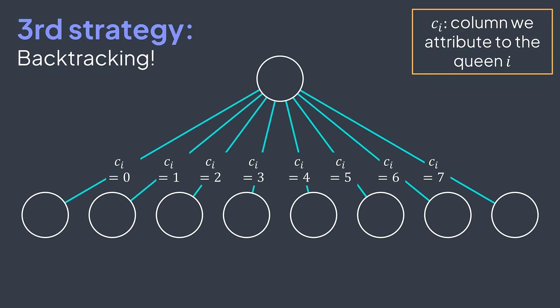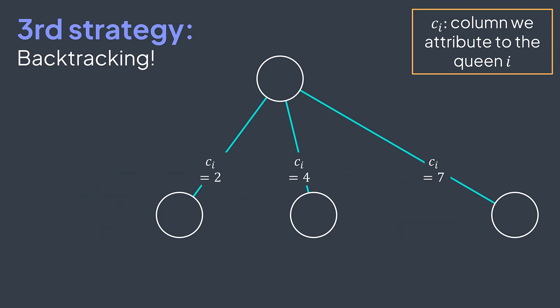This is why the N queens problem is a good example for explaining backtracking. In our implementation, we can check if a cell is safe before placing the queen — this avoids many useless recursive calls rather than placing first and detecting the threat at a base case.